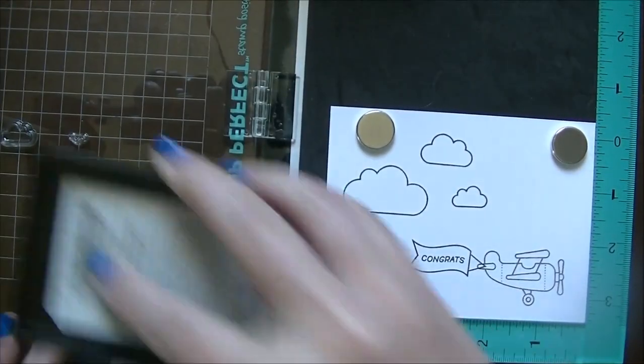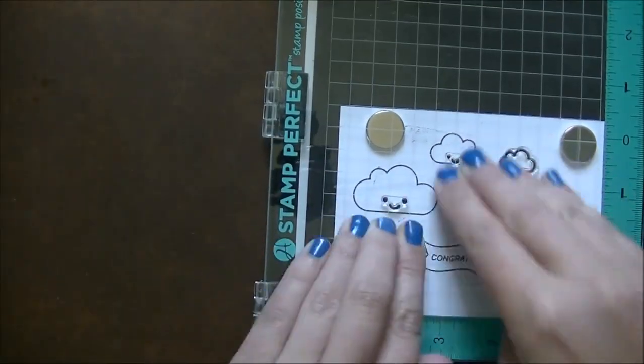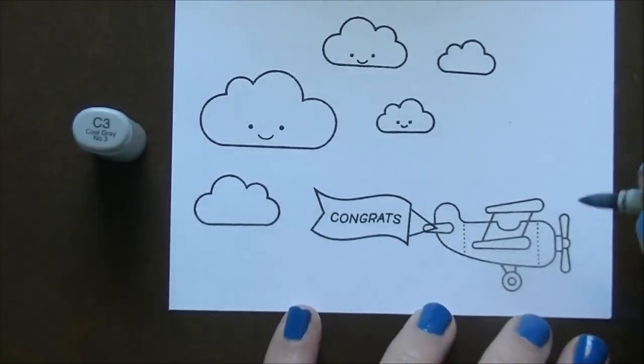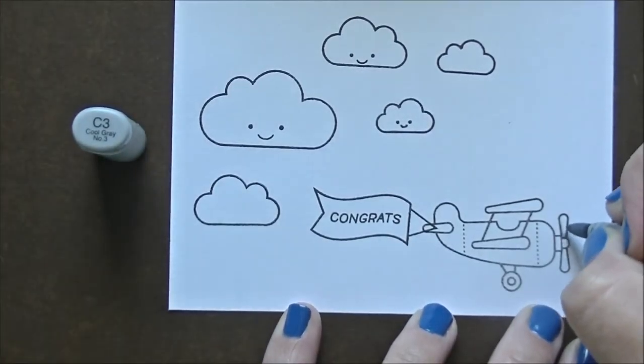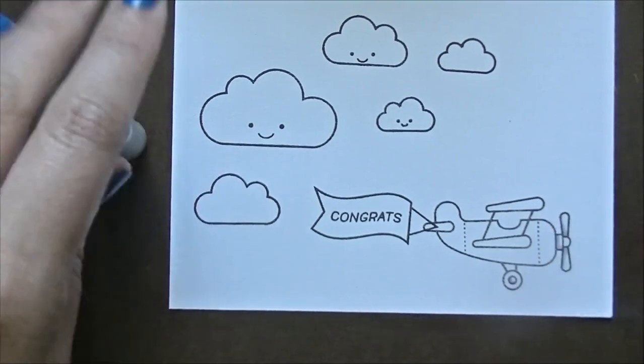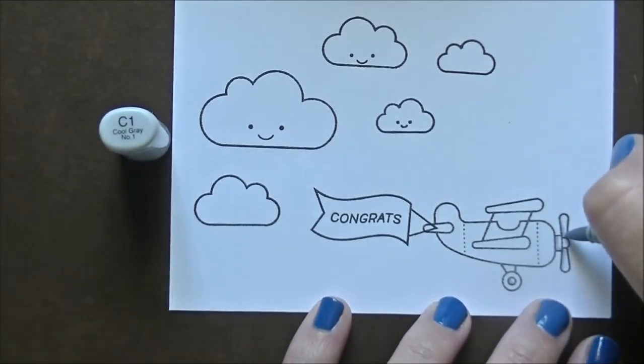I just kind of work on my stamping in layers like I did the plane and then the banner and then the congratulations in the first three clouds, and now I'm going to add the smiley faces in the last two clouds. Now that we got all of them done, we're going to start coloring everything up. As you can see I put all of the caps to the colors I'm using on the side of the screen there so you can see everything as we're going through.